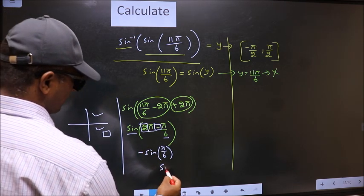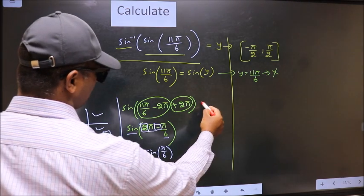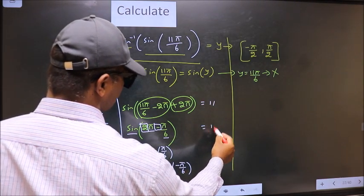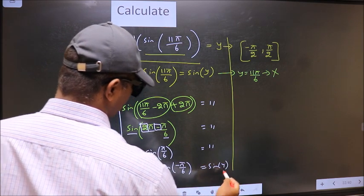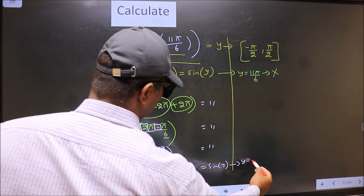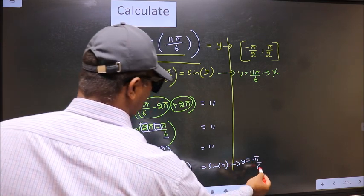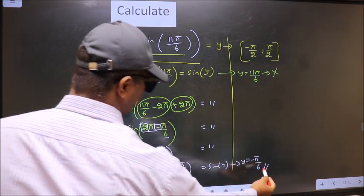Now shift negative inside. We get sign negative pi by 6. On the other side no change. Equal to sign y. Now comparing both sides we get y to be minus pi by 6. Does this lie in this interval? Yes. So this is our answer.